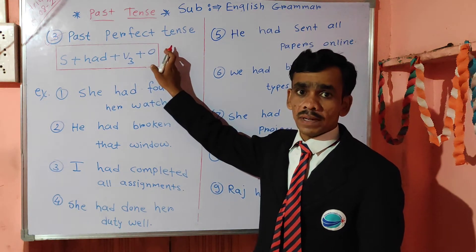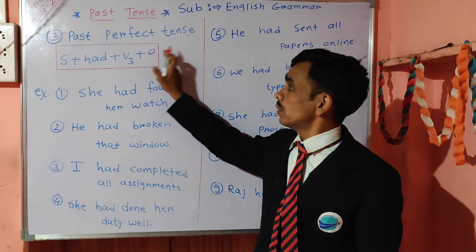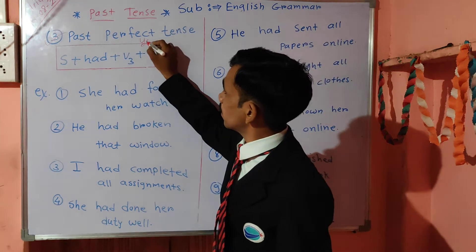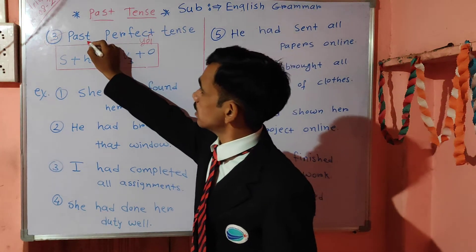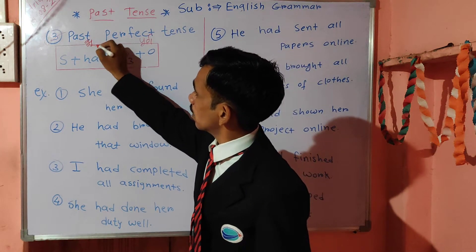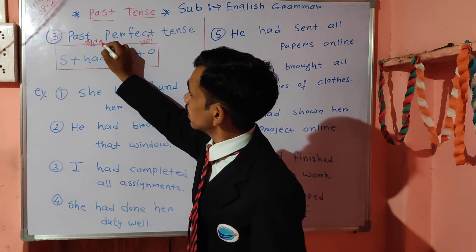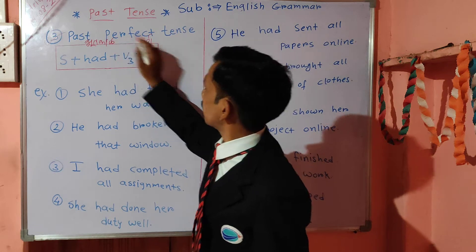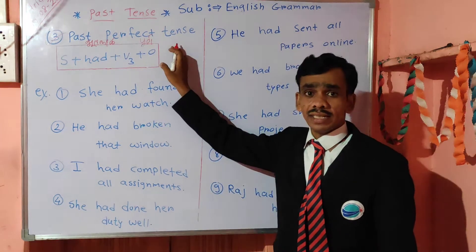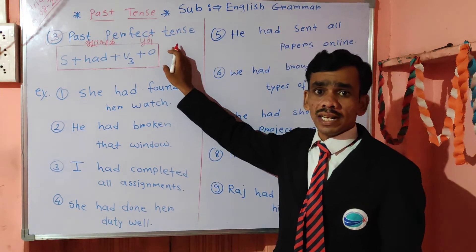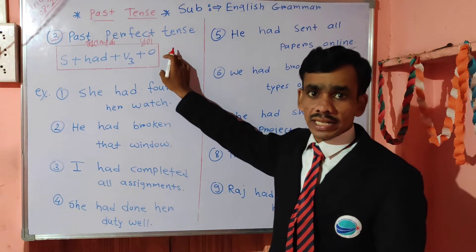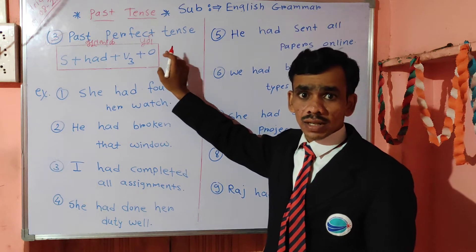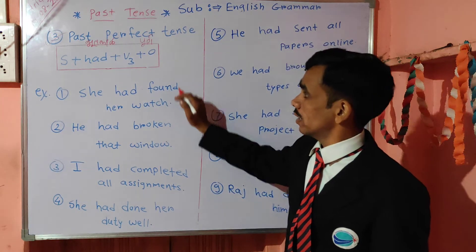Today we are going to see Purnabhutka. Perfect means Purnabhutka. Past means Bhutkal. Then who is Purnabhutka? Purnabhutka. Past continuous means Chaluabhutka. Understand?